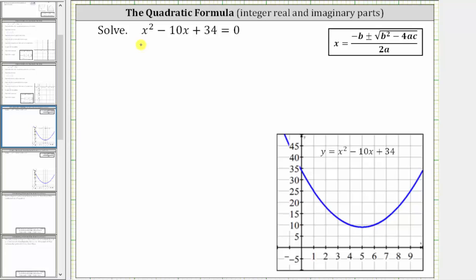We want to solve the quadratic equation x squared minus 10x plus 34 equals zero. Since there are no factors of positive 34 that add to negative 10, this is not factorable, and therefore we will use the quadratic formula to solve.